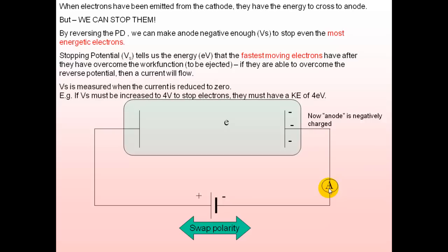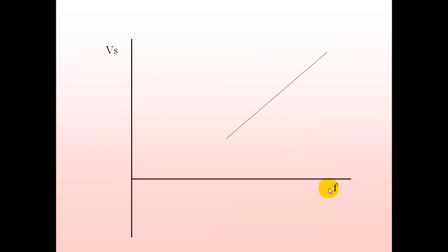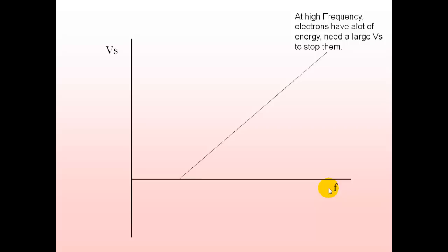The stopping potential Vs tells us the energy in electron volts that the fastest-moving electrons have after overcoming the work function. For example, if the stopping voltage must be increased to 4 volts to stop the electrons, those electrons have a kinetic energy of 4 electron volts. To convert to joules, multiply by the charge on one electron. On the stopping voltage vs frequency graph, higher frequencies require larger stopping voltages.